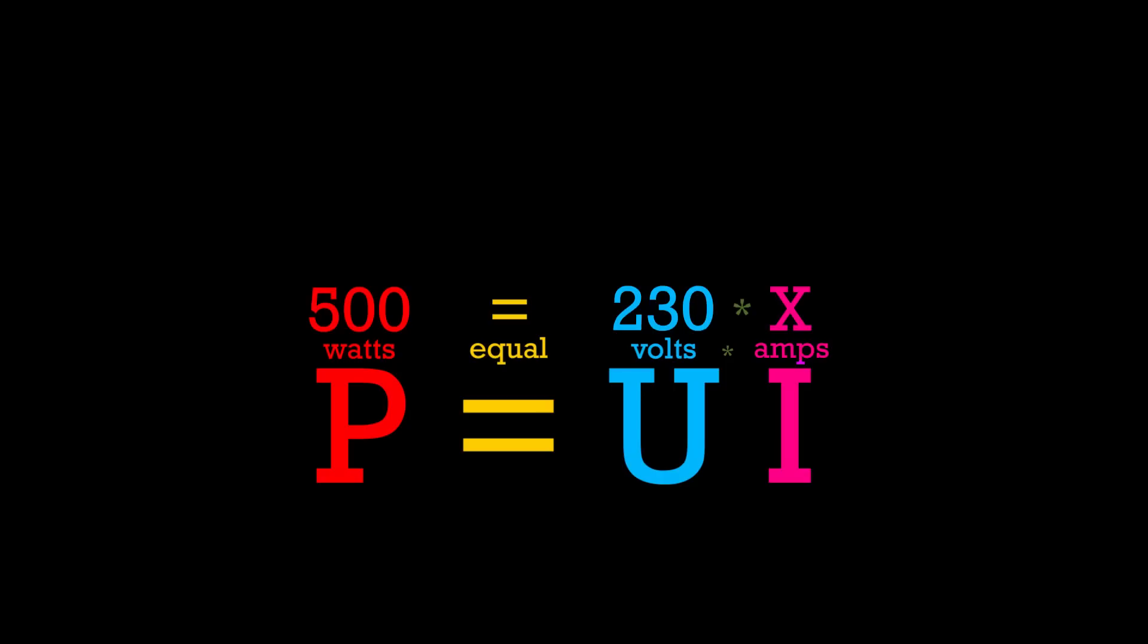So how do we solve this equation? Well this one is really easy. When we have something times X, we can divide both sides with that number to get only 1 X on the other side. So we're going to take 230 and divide the right side with it to produce 1 X.